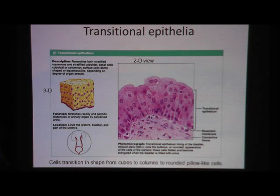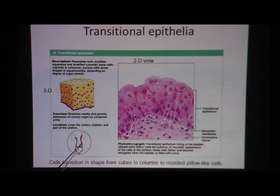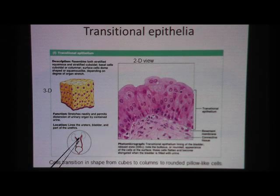Where are we? We are in the ureters, which is the tube coming down from the kidney. It also lines the urinary bladder, and it lines part of the urethra that empties the bladder.